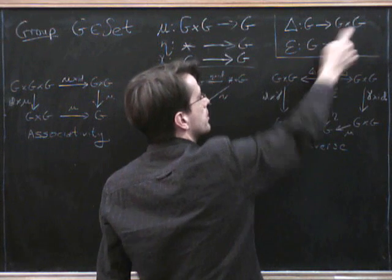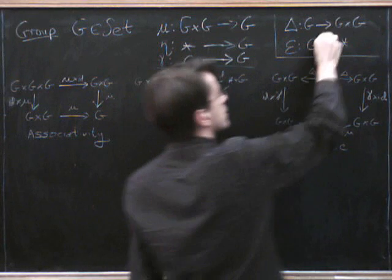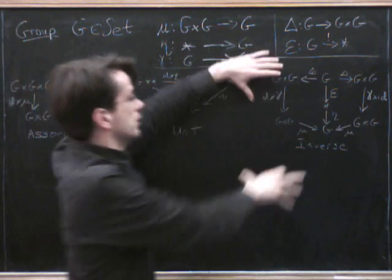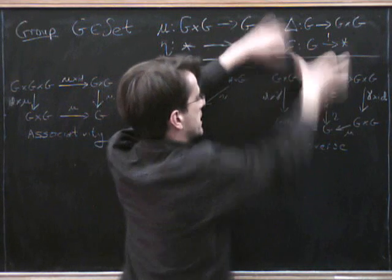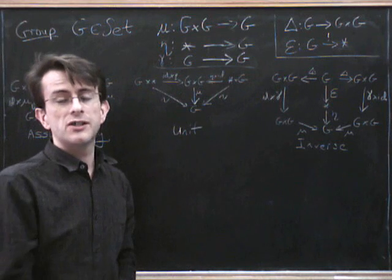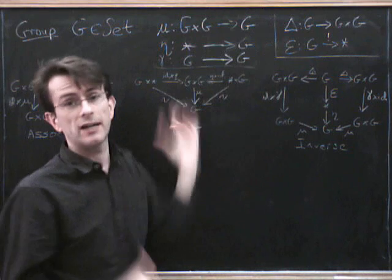This satisfies a certain universal property, and we get this map to the terminal object. And so with this bit of data, we can then define the inverses. So this definition is not going to work in general for monoidal categories, but it is going to work for cartesian categories.